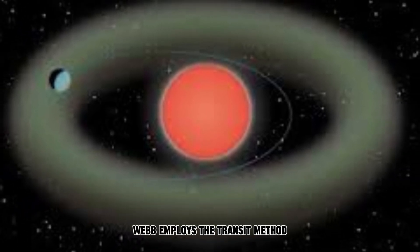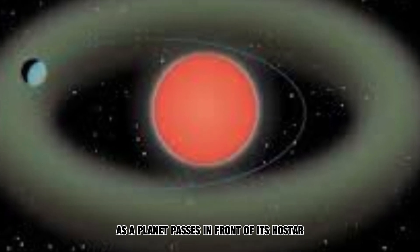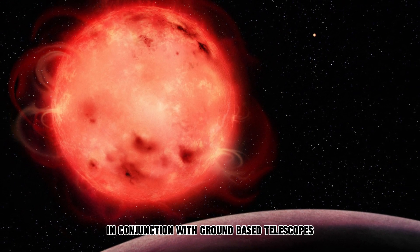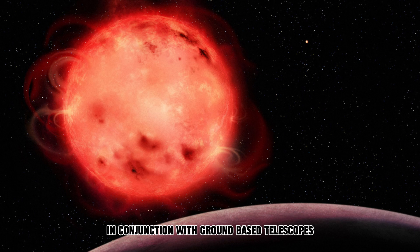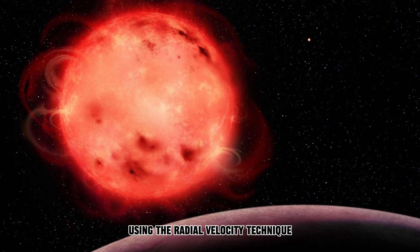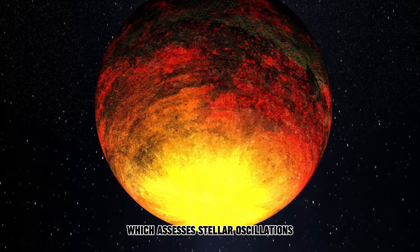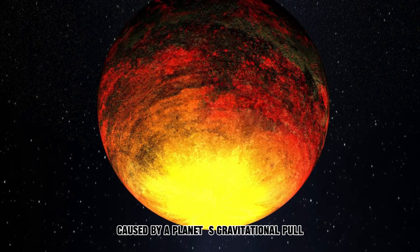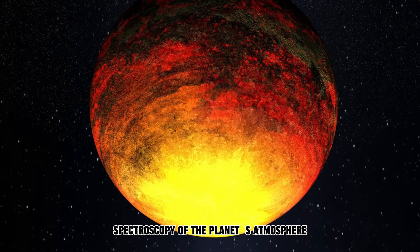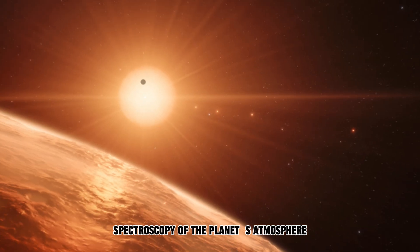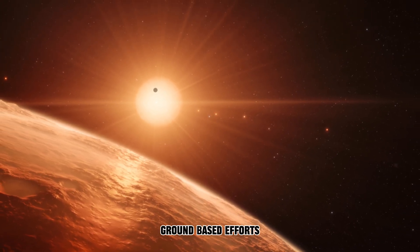Webb employs the transit method, detecting the dimming of starlight as a planet passes in front of its host star. This data collection technique, in conjunction with ground-based telescopes, aids in measuring planet mass using the radial velocity technique, which assesses stellar oscillations caused by a planet's gravitational pull. Webb then conducts spectroscopy of the planet's atmosphere, followed by collaborative ground-based efforts.